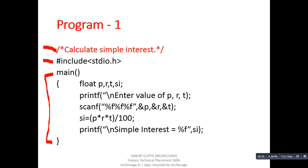The whole program is written inside the main function. Main is a function which is compulsory in a C program because execution of the program begins with main. Next is float — float is a data type through which we can declare float type variables. Here P, R, T, and SI are four variables that can store floating type values.